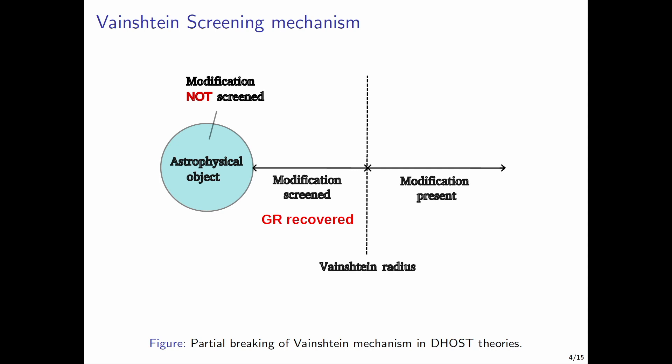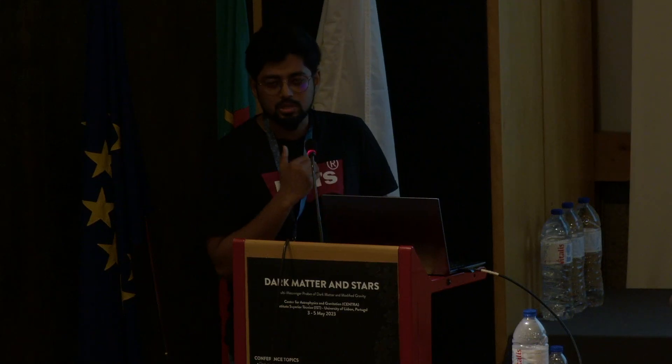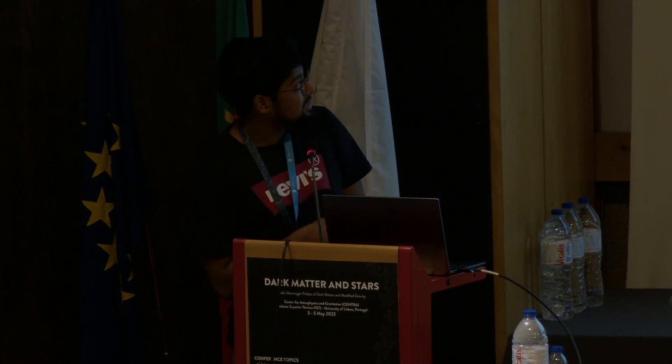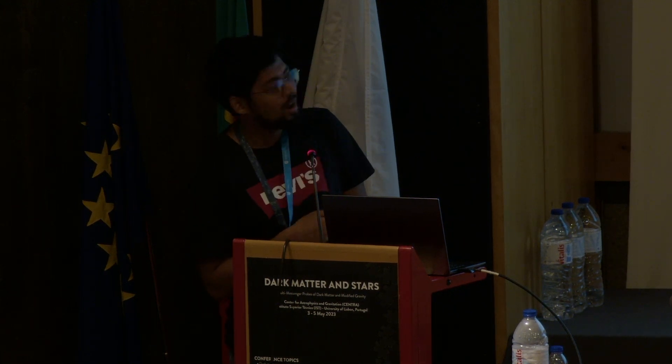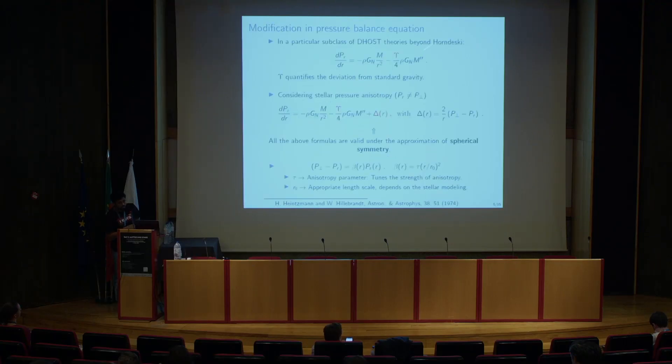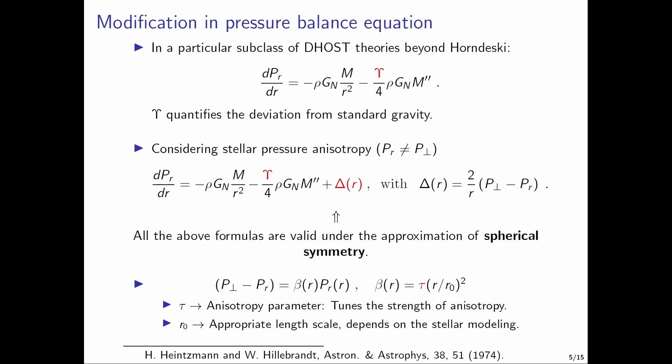The Vainshtein mechanism is one of the promising screening mechanisms in these scalar tensor theories where for a given astrophysical object there exists a characteristic radius beyond which the modifications in gravity because of scalar fields are present, while within this radius the modifications are completely screened thereby recovering Einstein's general theory of relativity. It has been validated through extremely precise experiments. However inside astrophysical objects such modifications are not screened which results in this modification of the pressure balance equation with this additional term, and Upsilon is the modified gravity parameter which quantifies the deviation from standard gravity.